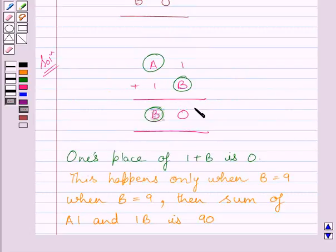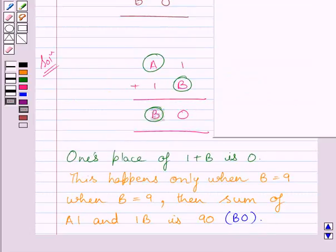As here in the puzzle, B0 represents the sum. Now when B is 9, then A1 plus 19 gives 90. Now we need to find the number that must be added to 19 to make the sum equal to 90.